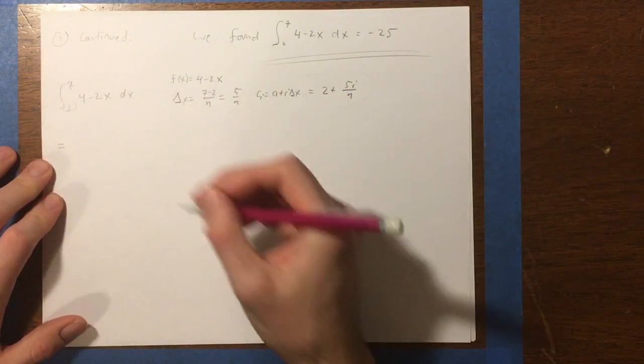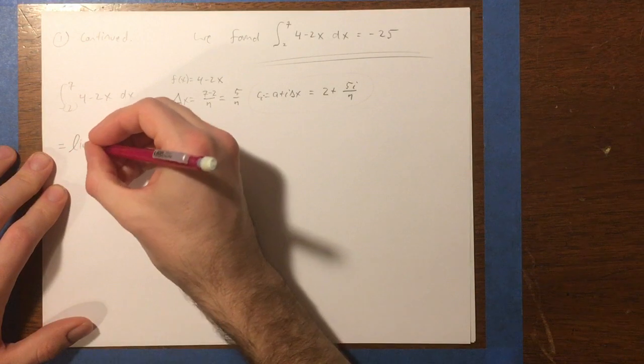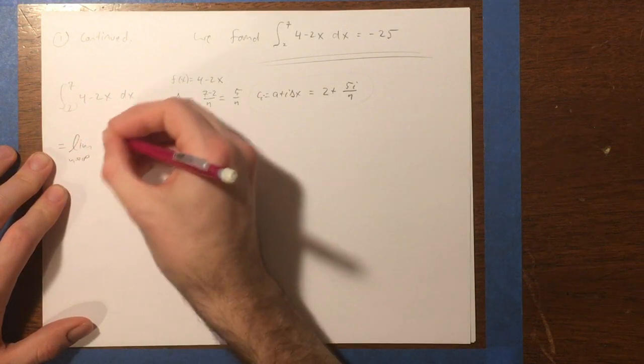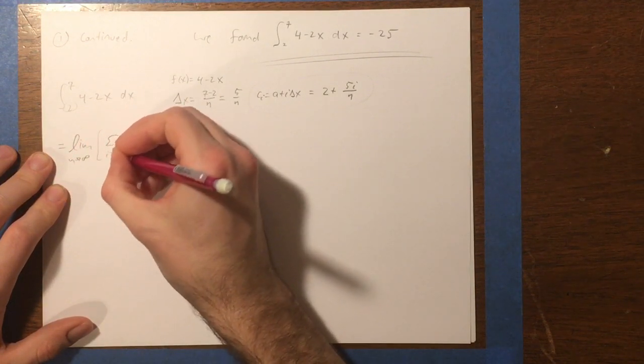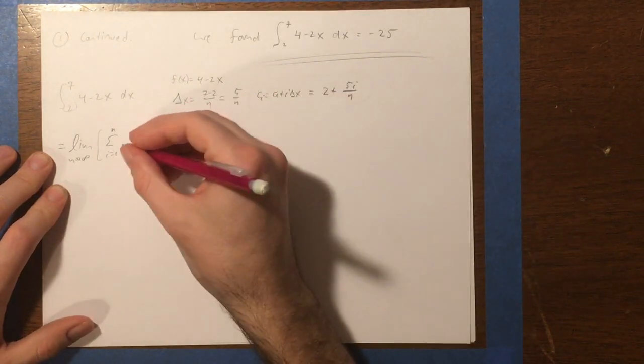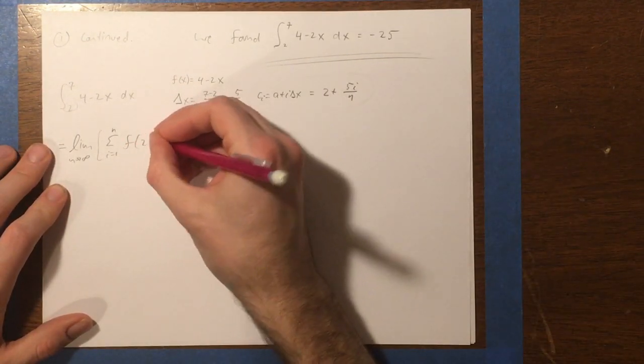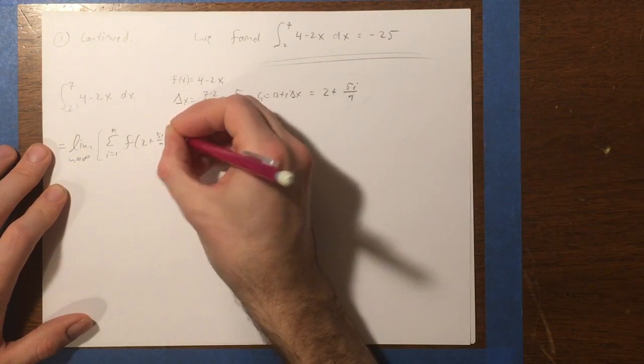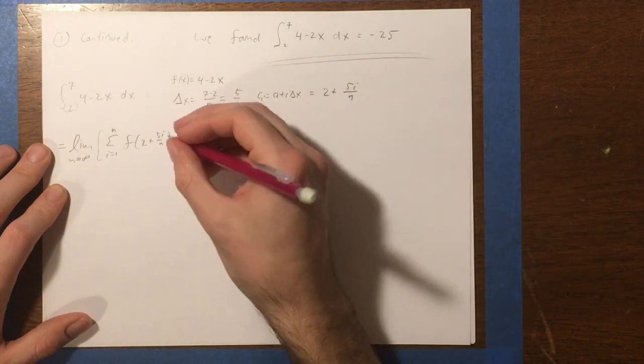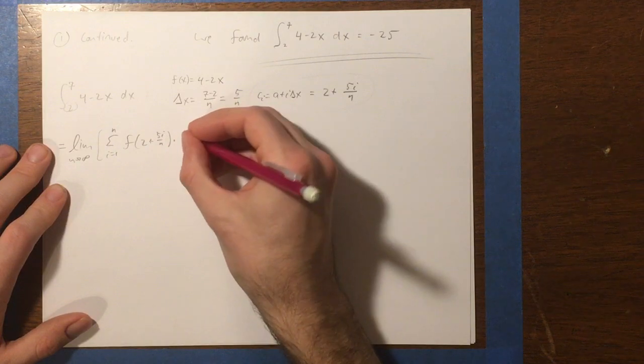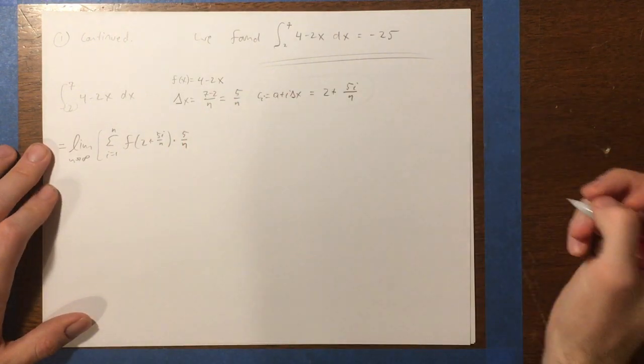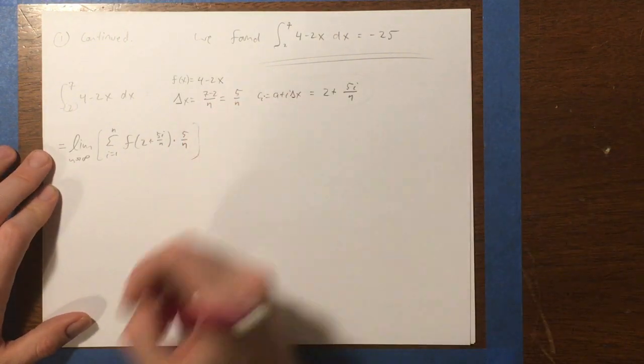So now, now let's write equals. Now let's write the limit, as n goes to infinity, of the Riemann sum. i equals 1 to n. I'm going to start by writing it out in terms of f. f of my sample point. f of 2 plus 5i over n. And then multiply it by delta x. So times 5 over n. So there's what I'll start with.